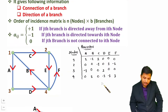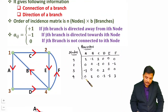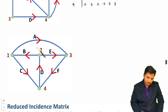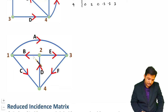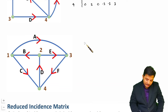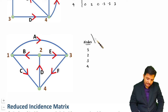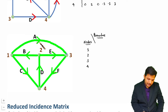Let me give you one more example of incident matrix. Here is another interesting graph for which we will identify the incident matrix. This graph also has 4 nodes: 1, 2, 3, 4 — written vertically. Horizontally we write the branches: A, B, C, D, E, F.